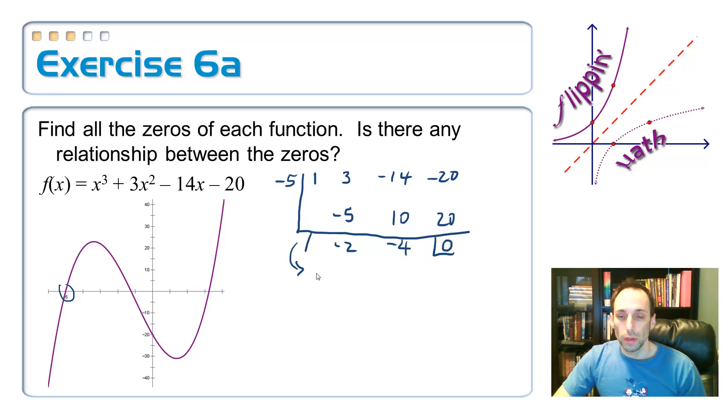So what do we have left over? That's right. We have the quadratic x squared minus 2x minus 4 equals 0. So at this point, you try to factor it. If it doesn't factor, use quadratic formula or complete the square. Complete the square? All right. Let's do that.